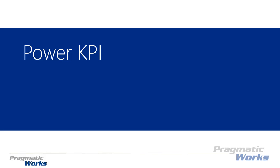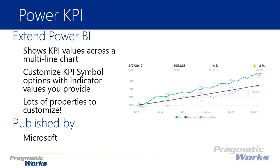Welcome back to the Power BI Custom Visuals course. In this module we're going to be looking at the Power KPI. The Power KPI is a unique visual in that it allows you to see a KPI value across a trend line. It has a multi-line chart where you can look at multiple values at once across time, though you can also look at categorical data if you wanted to.